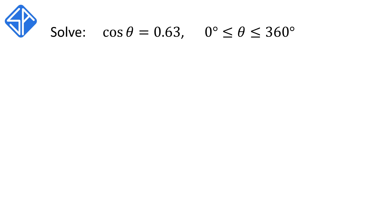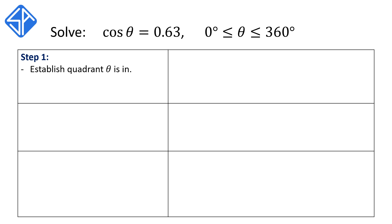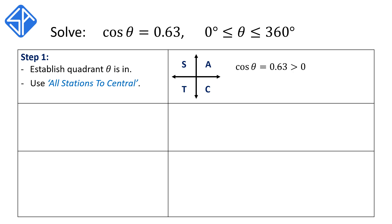Our last example, we're now going to solve for cos theta is equal to 0.63, with theta between 0 and 360 degrees. We're going to break it up into three steps again. The first step, we need to establish which quadrant theta is in, so we use ALL STATIONS TO CENTRAL again. For this question, cos theta is equal to 0.63, which is positive, and cos theta is positive in Q1 and Q4. So this tells us that the angle theta will be in Q1 and Q4.